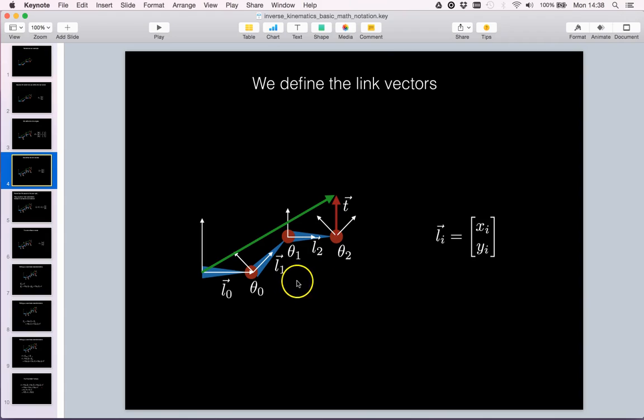For each of the links we can also specify the translation, the link vector as we call it. For link 0 we have L0, for link 1 L1, for link 2 we have L2. They all have the same structure consisting of an X and Y translation coordinate.